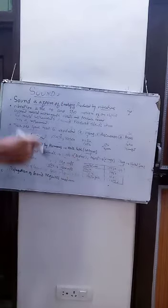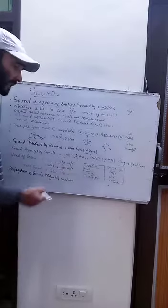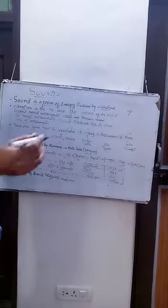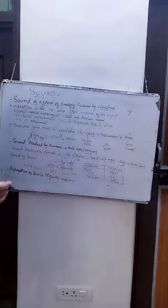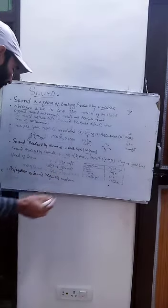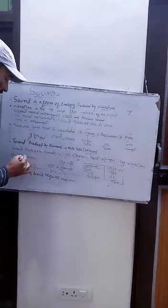Oxygen or normal air has a speed of 346 meters per second, which is the typical speed of sound we reference.